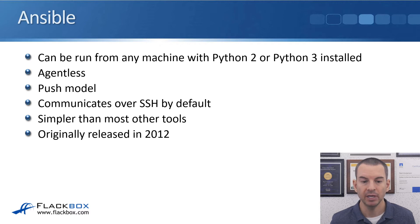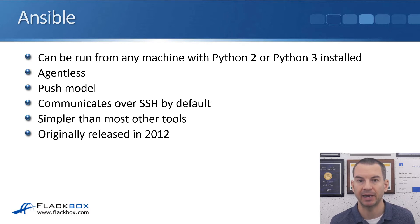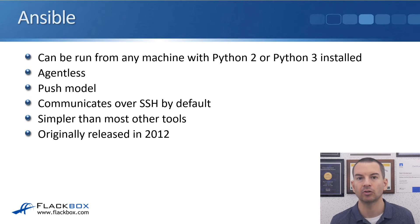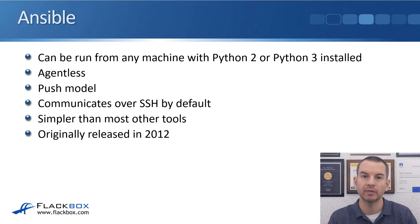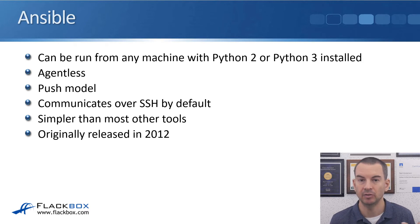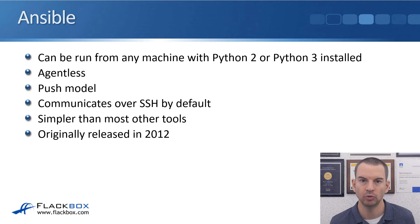The first one we'll look at is Ansible. It can be run from any machine with Python 2 or 3 installed — that's Linux and Mac by default — and typically you'll be running it from a Linux machine. Ansible is agentless, meaning you don't need to install a software plugin on the devices you're going to be managing. Everything is managed centrally from Ansible itself. It uses a push model, so it pushes the configuration to the devices. Ansible communicates over SSH by default, and it's probably the simplest of the configuration management tools with a very shallow, easy learning curve.